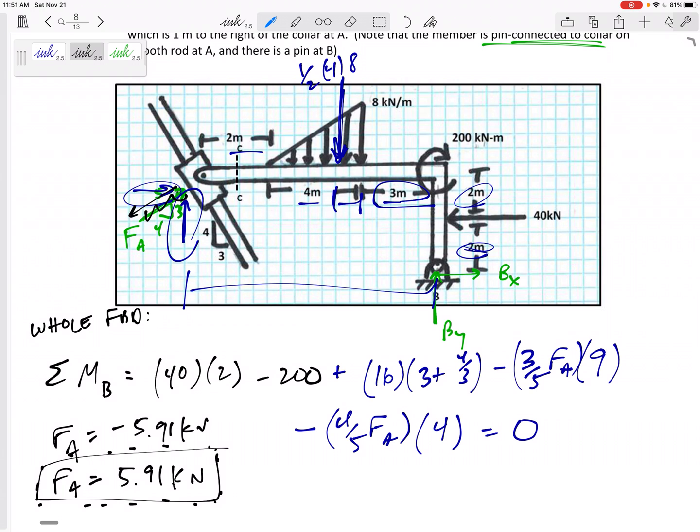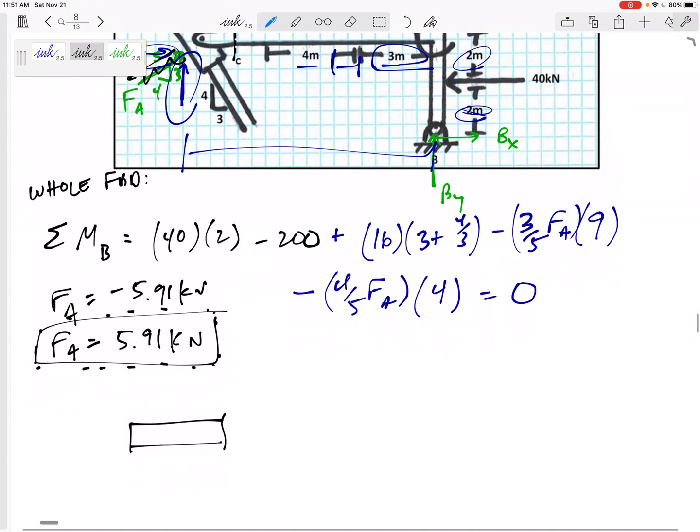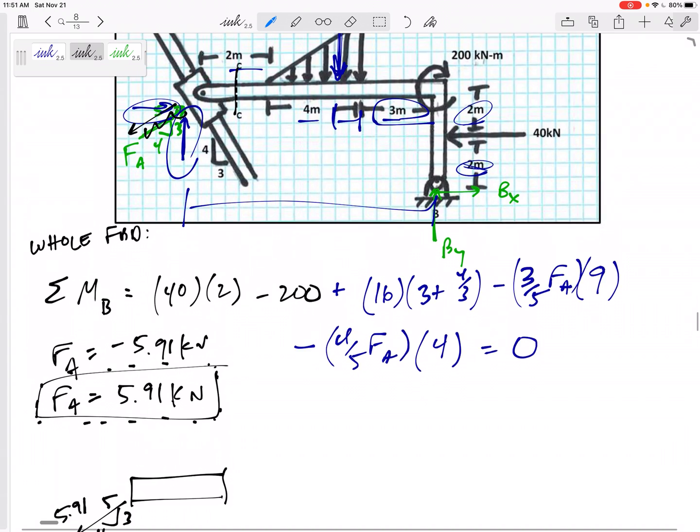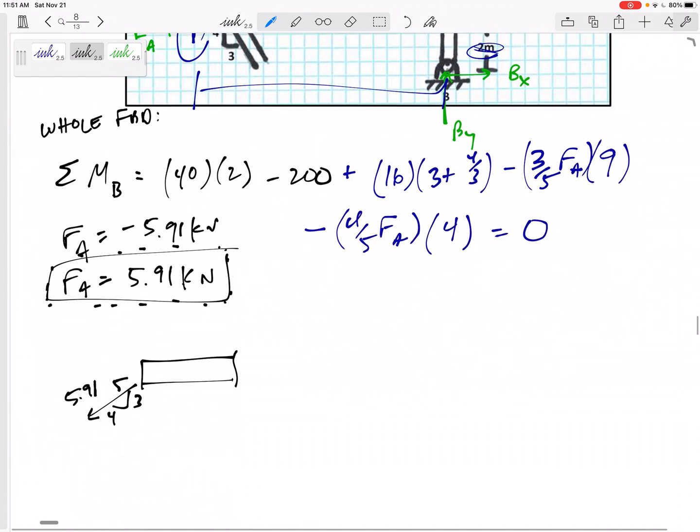Okay, now that I've solved for that, I'm ready to cut it, right? Cut it right here. I'm keeping this side. This is 5.91 this way. 5.91. It is at a 4-3-5 angle. And that's all I have right here. There's no distributed load. There's no other forces. So that's all I've got right there.